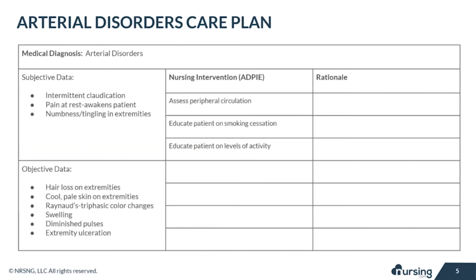Let's start to look at some of the nursing interventions necessary with arterial disorders. First, assessing peripheral circulation is necessary as arterial disorders affect the arteries that bring oxygenated blood to the tissues. So pulses may be diminished. It may be necessary to use a Doppler to locate their peripheral pulses. Monitoring pulses is imperative to prevent necrosis of tissue or even the need for amputation.